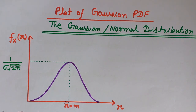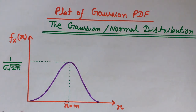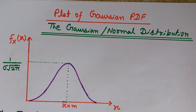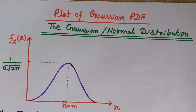Let's see some basic properties of the Gaussian probability density function. In probability theory it is a very common continuous probability distribution, generally used to represent real-valued random variables having unknown distributions. For example, the thermal noise generated by the random motion of thermally agitated electrons has the Gaussian distribution.